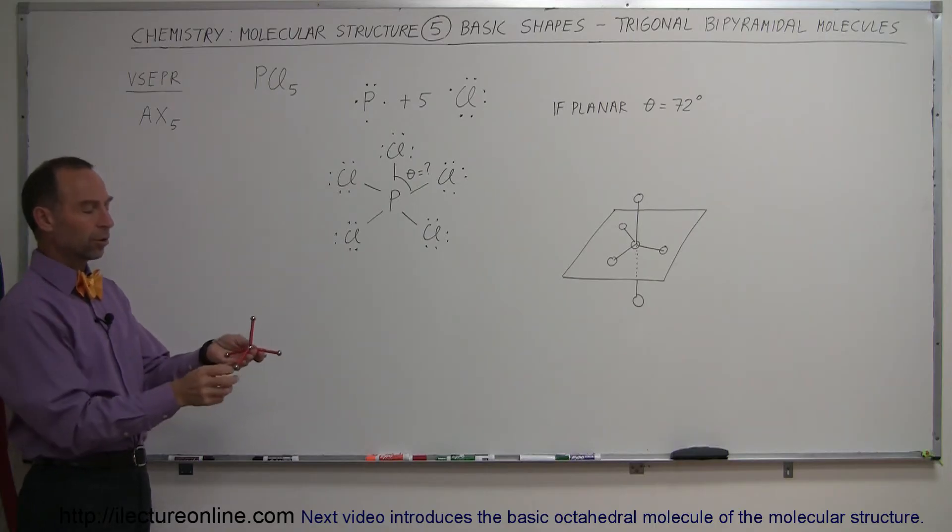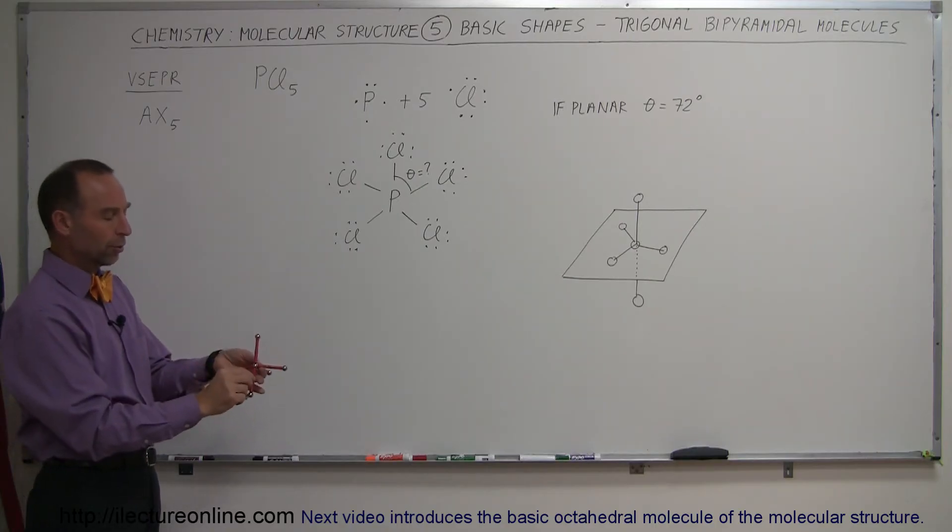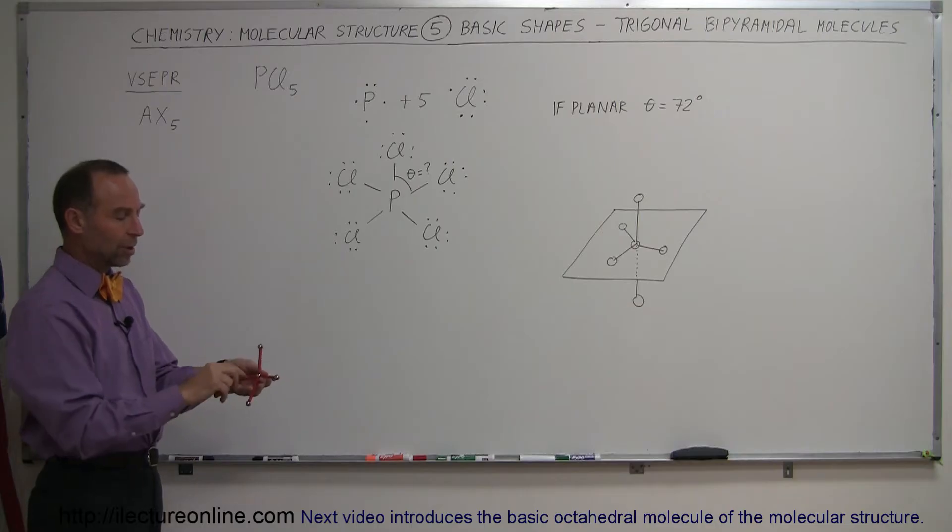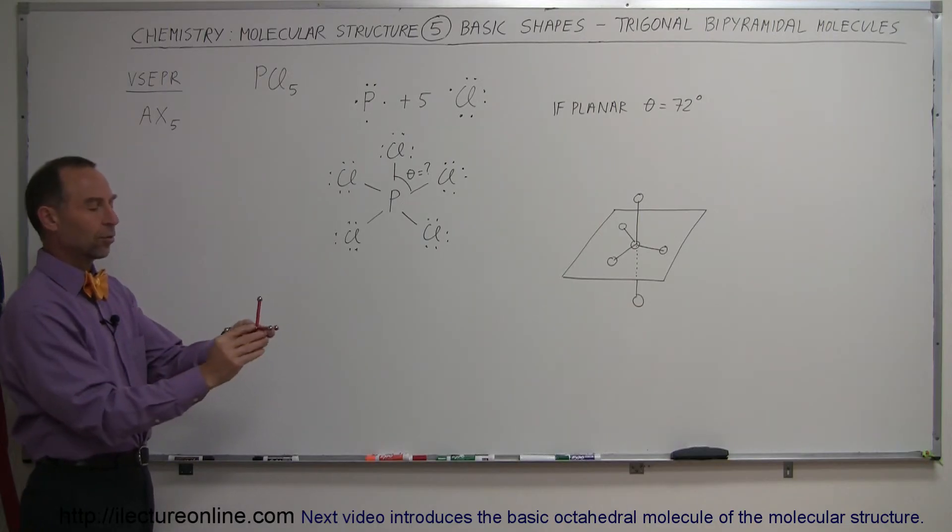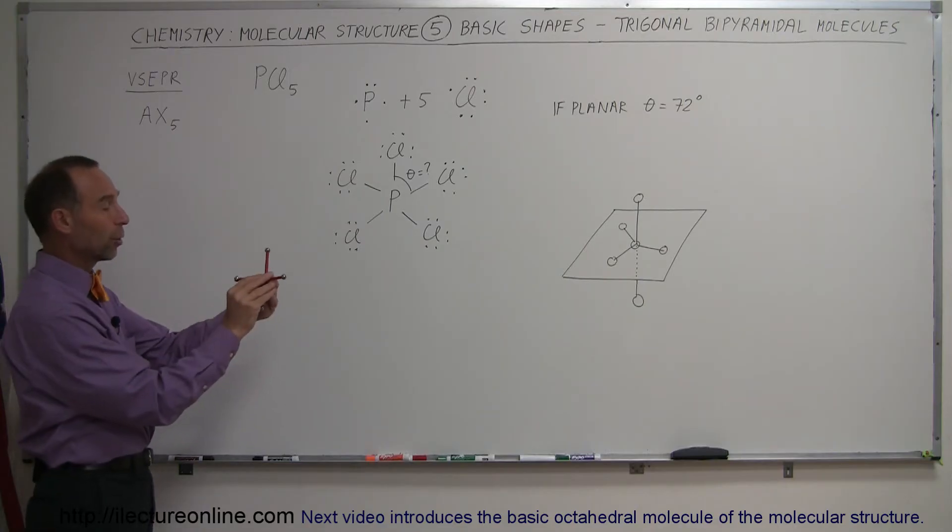So one molecule can go to the top, one molecule can go to the bottom like this, and then these three will stay in a planar sense. So three of them in a plane, that's where the trigonal comes from.